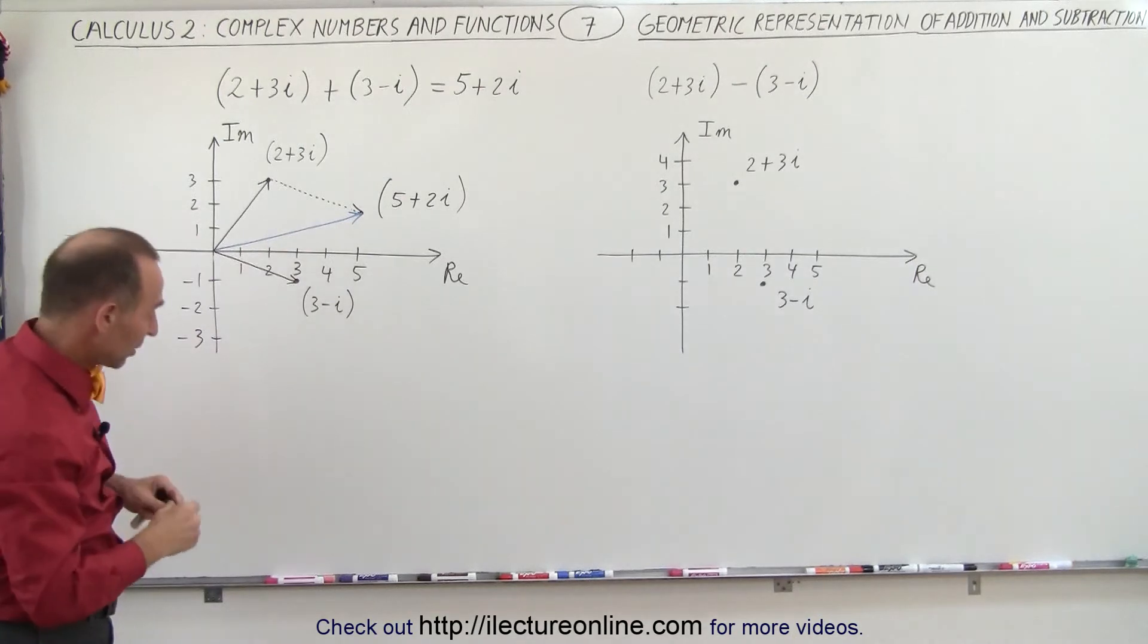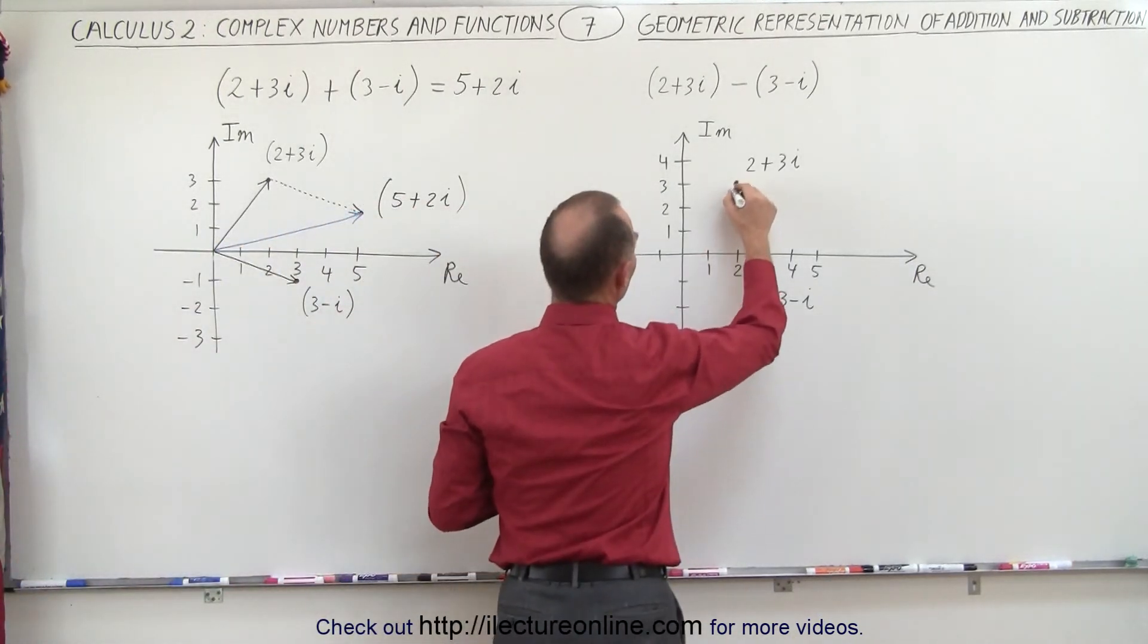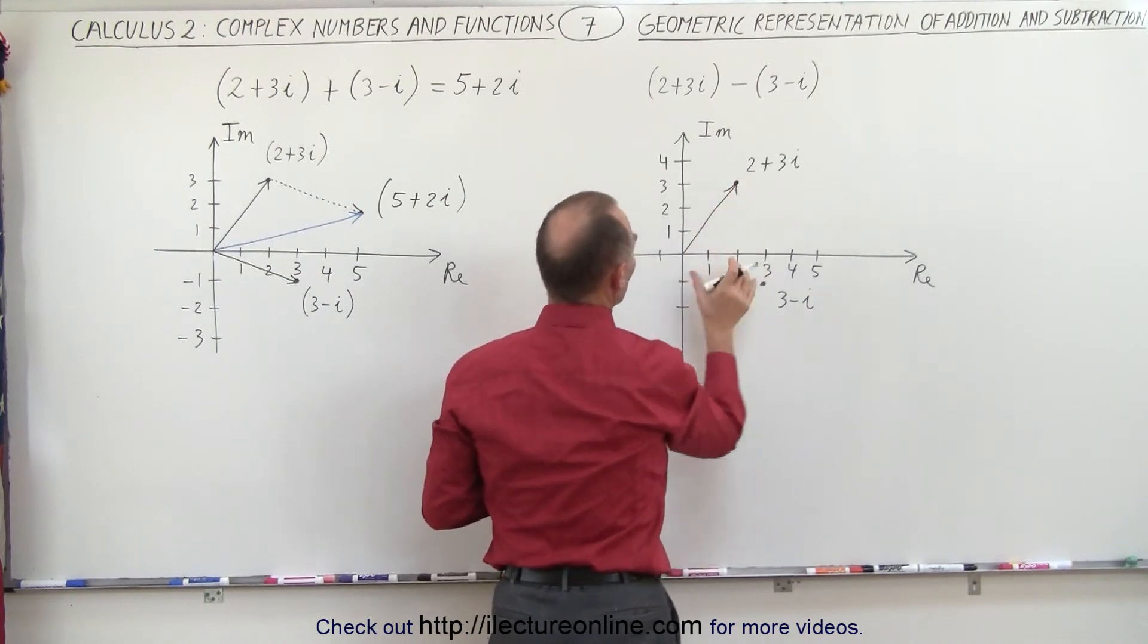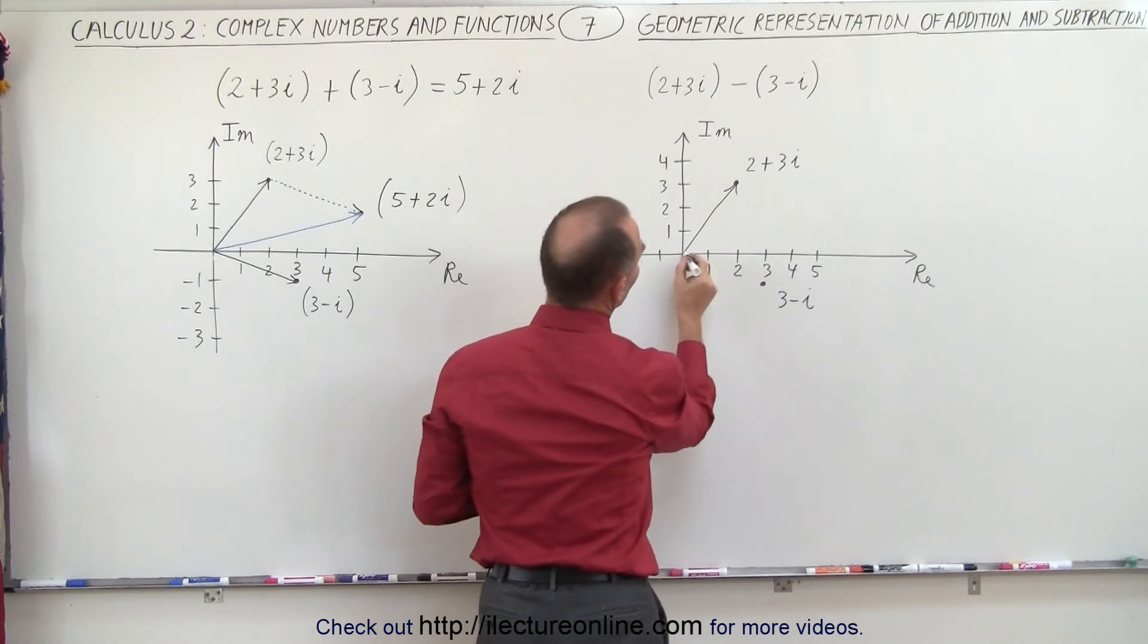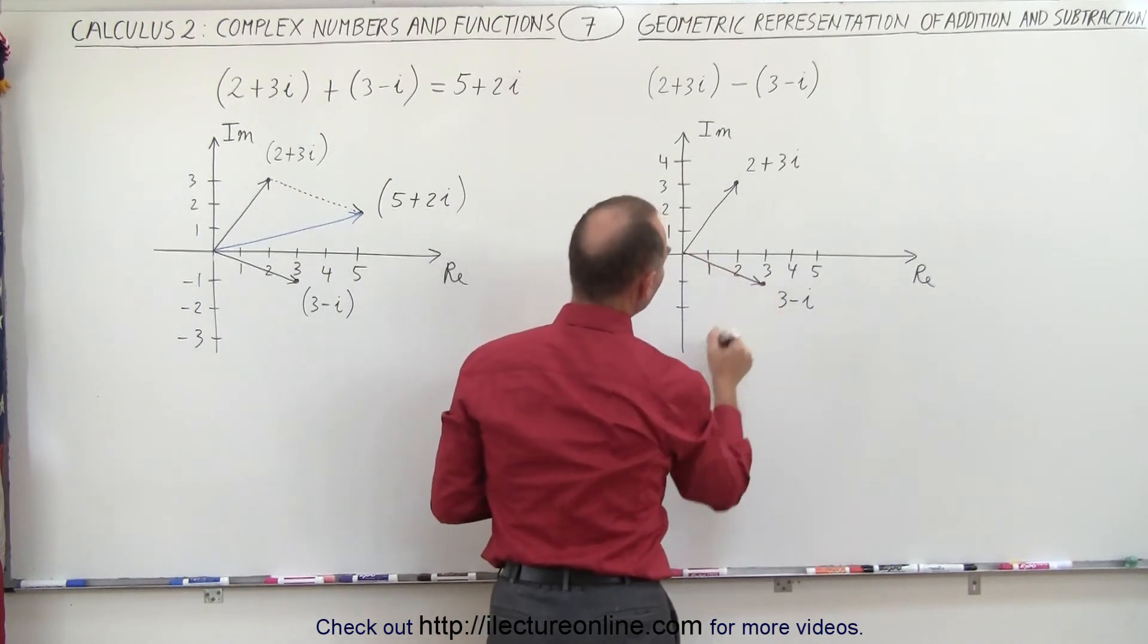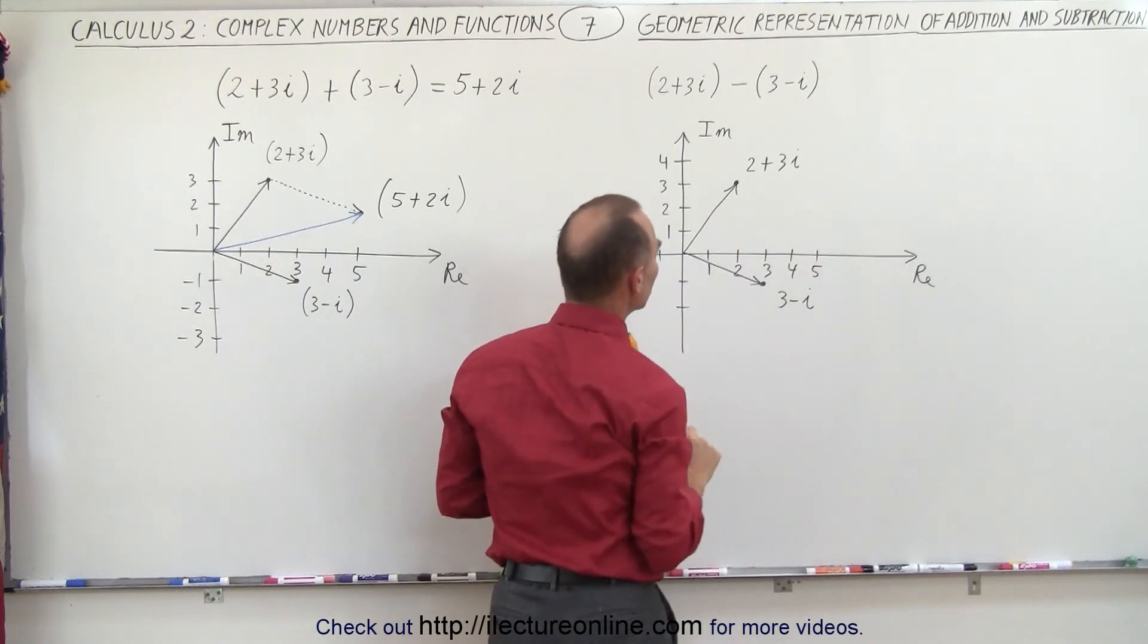Now what happens when we subtract the two? Again, we can represent that vectorially. Here we have our first vector that has a real part equal to 2 units and an imaginary part equal to 3 units, and here's our second vector, which is a real part of 3 units and an imaginary part of minus 1 unit.